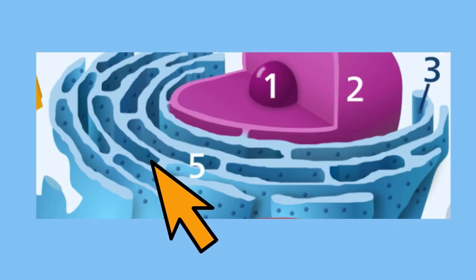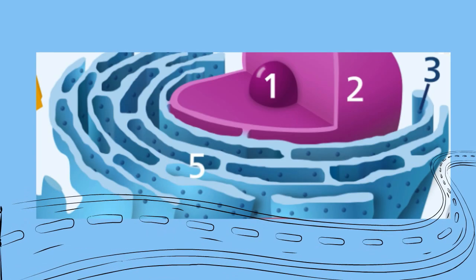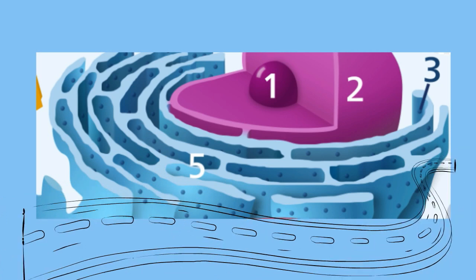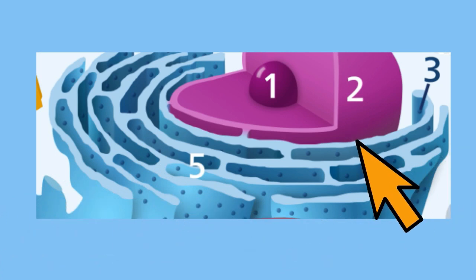If you take a look at the ER, you will notice that it consists of folded membranes and looks like a transportation system. The ER is located near the nucleus and helps the cell transport important materials throughout the cell.